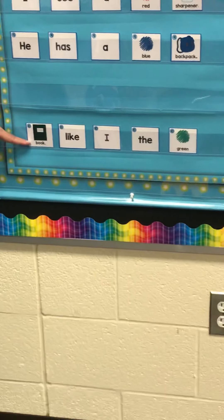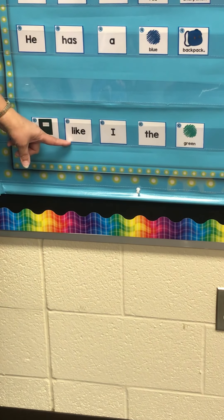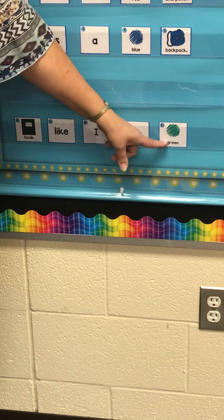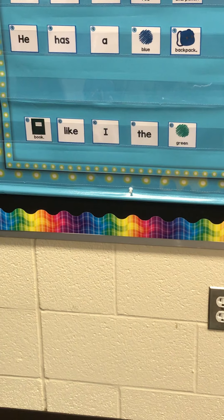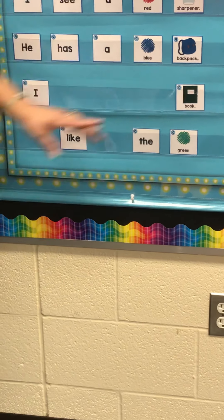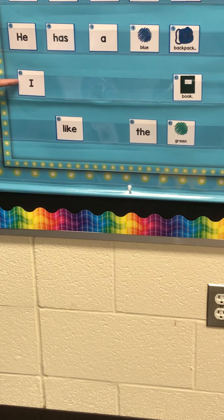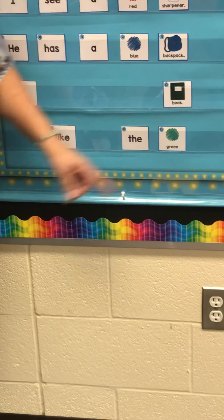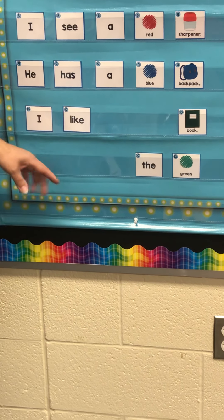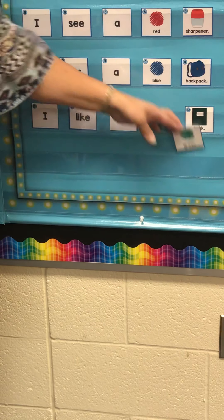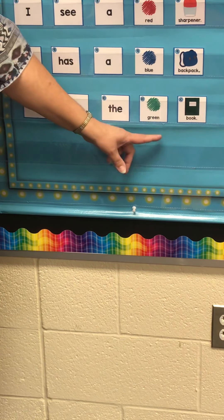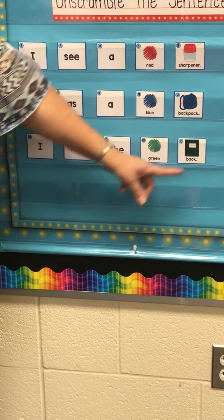The next one - what's this a picture of? Book. This week's popcorn word: like. Popcorn word: I. Popcorn word: the. Color word: green. Where's the capital? I. And book has the period. Which one makes sense? I like. I like the green book. Everybody read: I like the green book. It ends with a period, so that means it's a telling sentence.